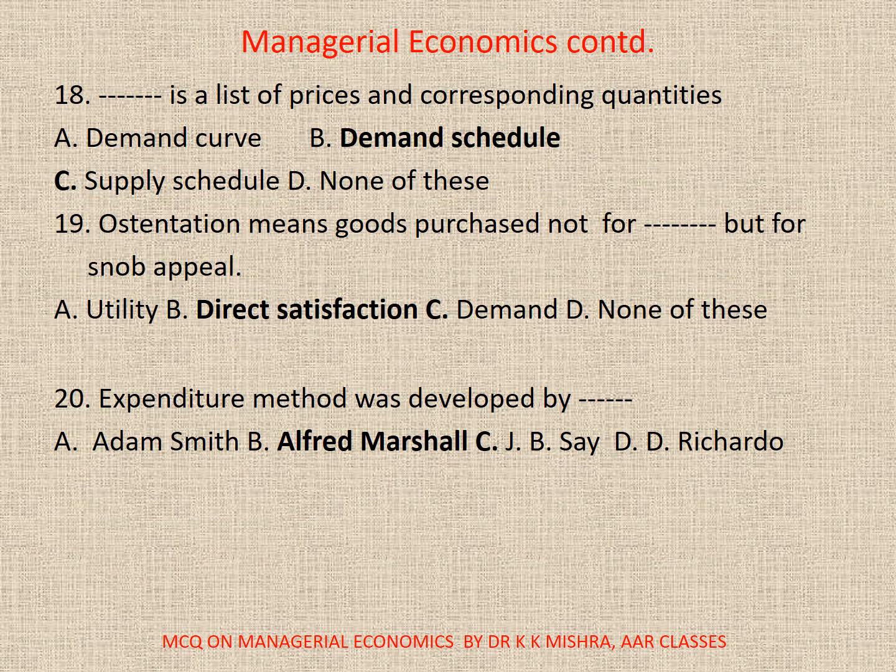18. Dash is the list of prices and corresponding quantities: A. Demand curve, B. Demand schedule, C. Supply schedule, D. None. Correct option is B. Demand schedule.